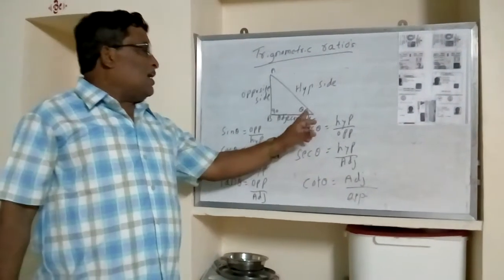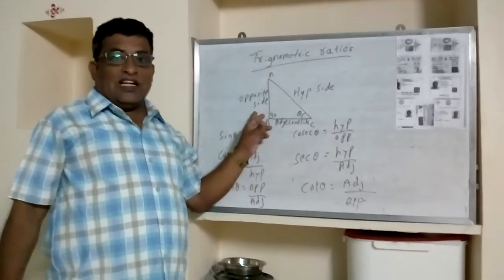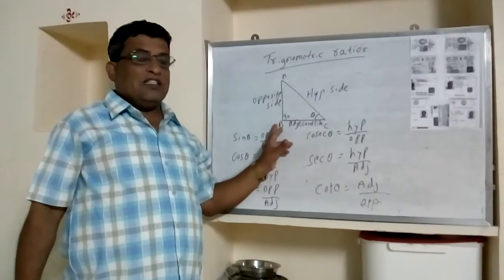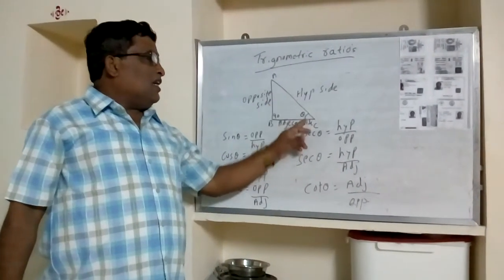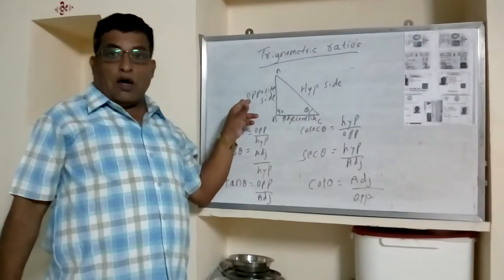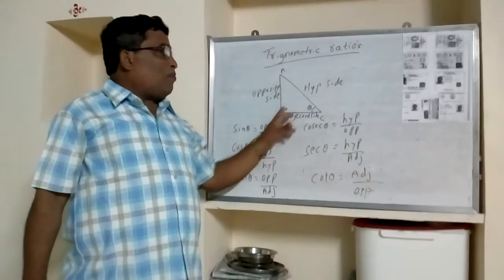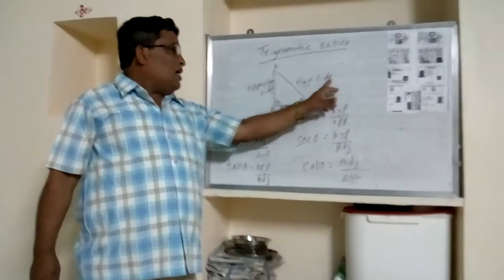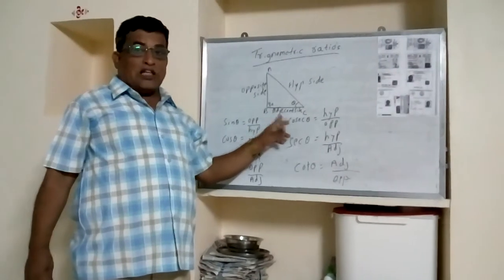This is a right angle triangle. Any one angle is 90 degrees. The acute angle opposite side is called the opposite side. The right angle opposite side is called the hypotenuse side, and the remaining side is called the adjacent side.